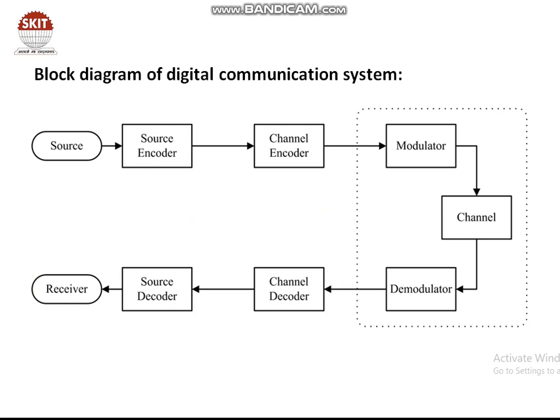Here we will discuss the digital communication technique. This is the basic block diagram of a digital communication system — how information is transmitted in a digital communication system. The first block is the source. The source generates the information, for example a human being producing voice and speech, or a computer system. Any device or anything which generates information is called the source.